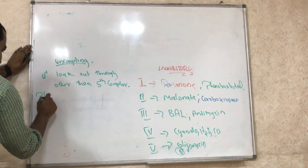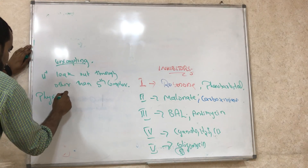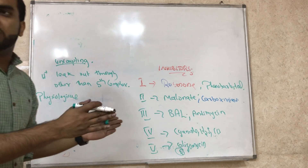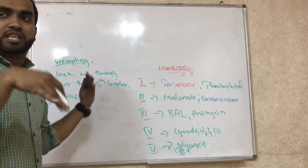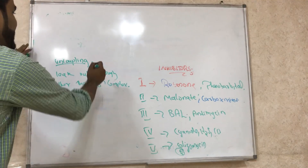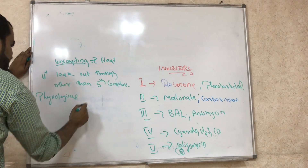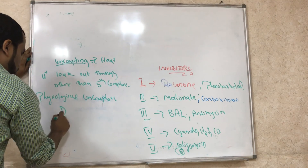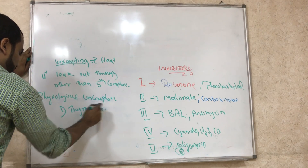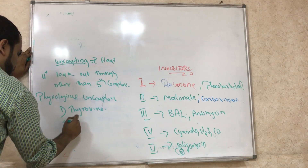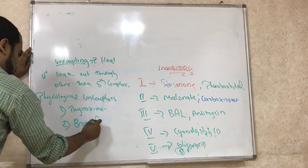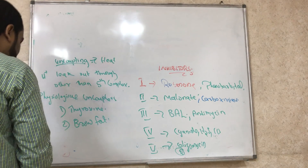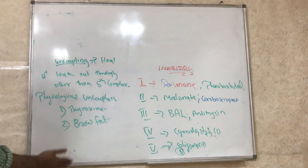There is physiological uncoupling that normally occurs in our body. When H+ comes out through the ATP synthase complex, we get ATP. But if it leaks through other routes, energy is released as heat. Physiological uncouplers include thyroxine and brown adipose tissue (brown fat), which is a classic example. Bilirubin can also play a role.